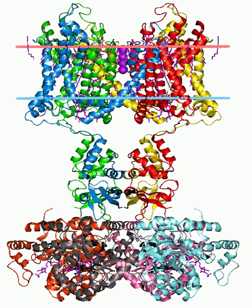In this inactivated conformation, the channel cannot open even if the transmembrane voltage is favorable. The amino terminal domain of the K+ channel or an auxiliary protein can mediate N-type inactivation. The mechanism has been described as a 'ball and chain' model, where the N-terminus of the protein forms a ball tethered to the rest of the protein through a loop. The tethered ball blocks the inner porehole, preventing ion movement through the channel.